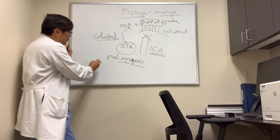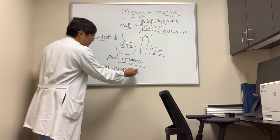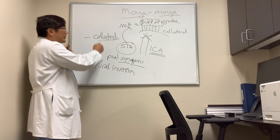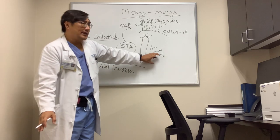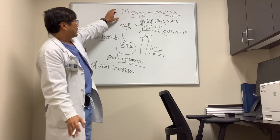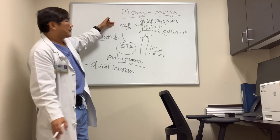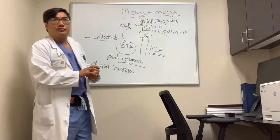And you can do a dural inversion where you're taking that little piece of dura and just turning it upside down. So these are the ways that you're trying to induce the collateral formation to bypass the occlusive disease in the internal carotid artery and prevent the formation of the puff of smoke, which is Moya Moya, and provide circulation to the brain to avoid a hemorrhage or a stroke.